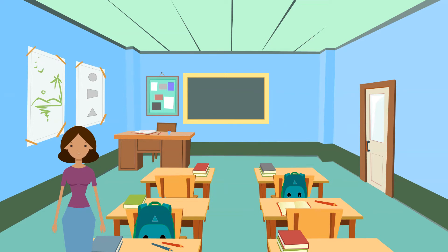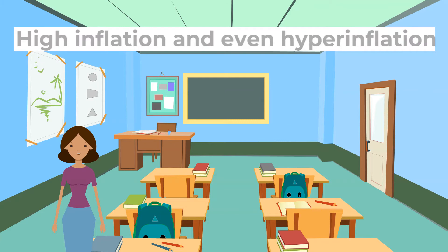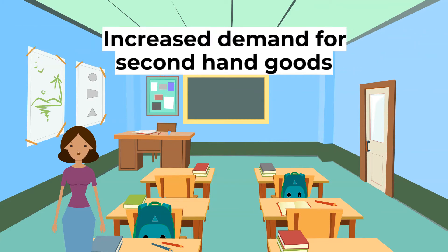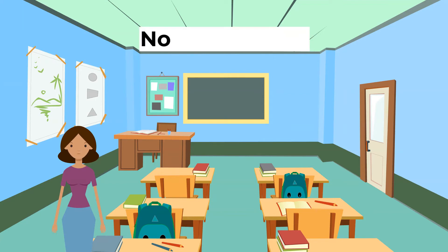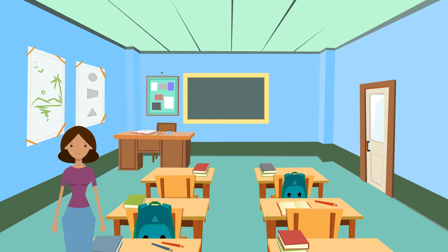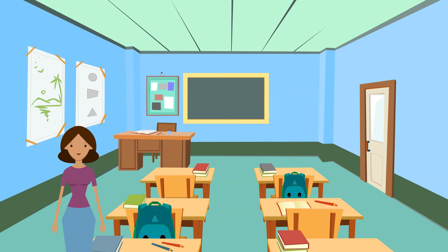However, there are problems with using quantitative easing. It is very risky and, if not controlled properly, could cause high inflation and even hyperinflation. Others say it would only lead to increased demand for second-hand goods which pushes up prices but does not increase aggregate demand — for example, it would not lead to more new houses being built but only second-hand houses becoming more expensive. There is no guarantee that higher asset prices lead to higher consumption through the wealth effect, especially if confidence remains low. It had a large effect on the housing market by stimulating demand and leading to rapid price rises since 2013, helping to worsen issues of geographical mobility. It also led to rising share prices which increases inequality, since the rich grow richer whilst the poor see none of the gains. It was not meant to be permanent and there are concerns that banks and economies are too dependent on quantitative easing, particularly within the eurozone.